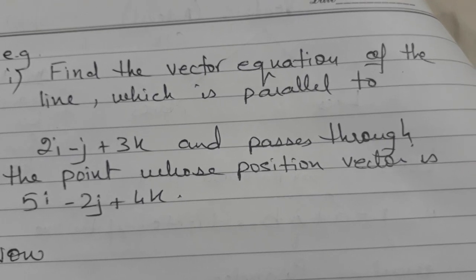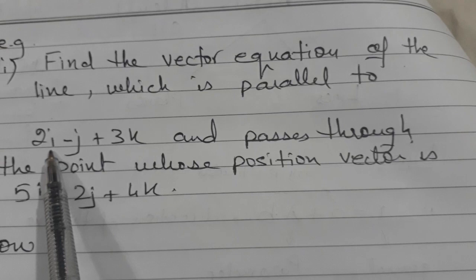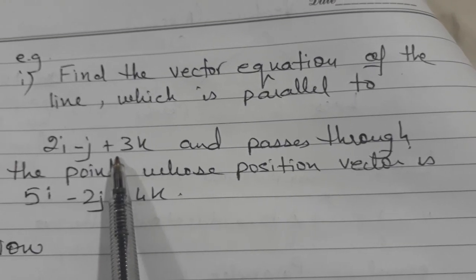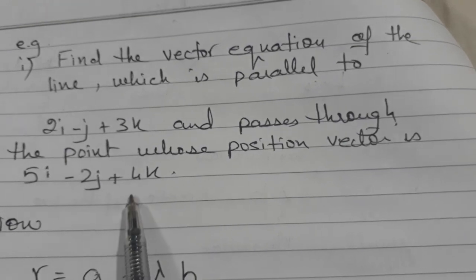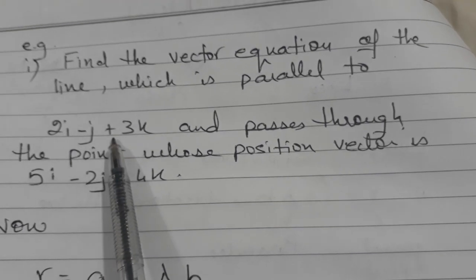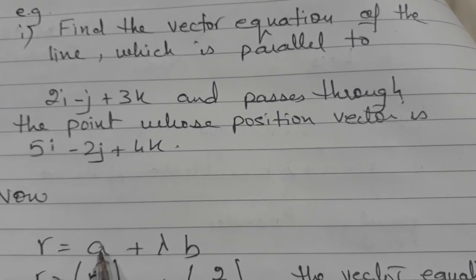So let's start with the example. Suppose you are given that line is parallel to this vector direction and line is passing through this point. It means you know what will be substituted in place of a.